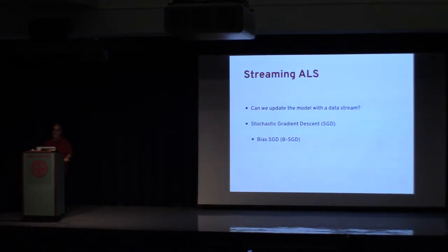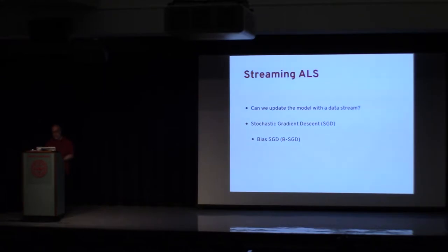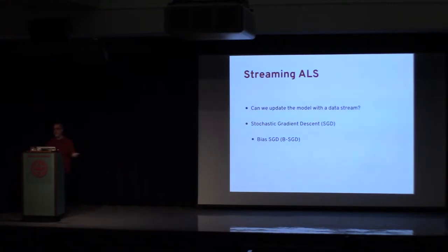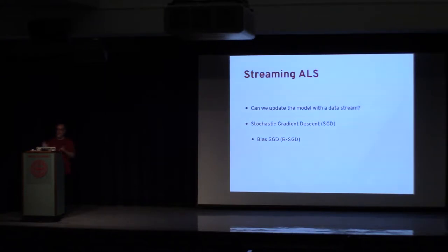You might think: can we do this in a streaming way? If we get new ratings, new users, or a new product, can we just recalculate the whole thing? Well, yes, but that's not really streaming for two reasons. First, you have to keep the entirety of the historical data. Second, if you want to do this in real time for millions of users and products, recalculating everything is impractical. We want a method that allows factorization with just one rating or a few ratings at a time. Fortunately, there is one: stochastic gradient descent applied to the factorization — specifically, biased stochastic gradient descent.